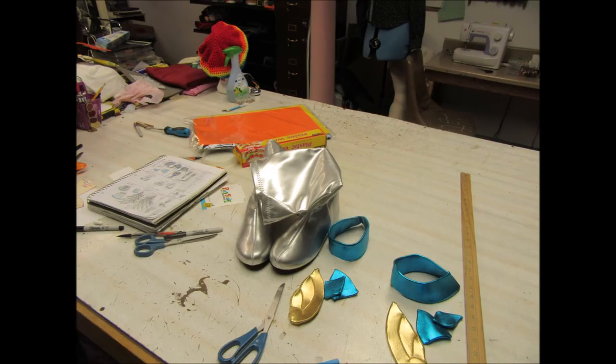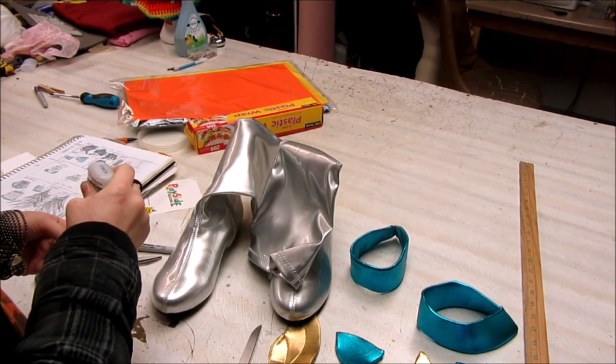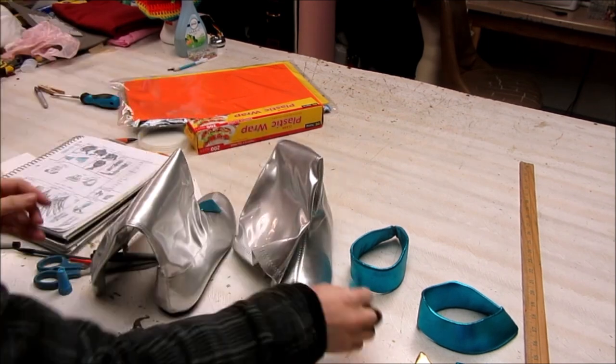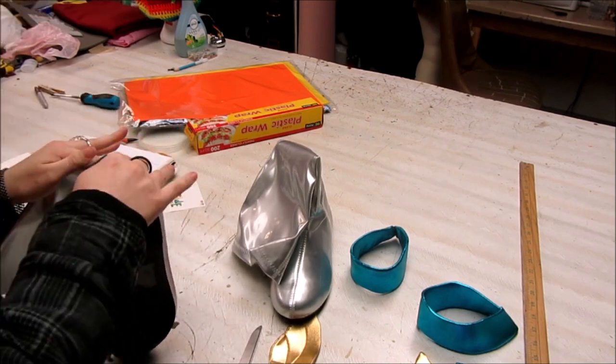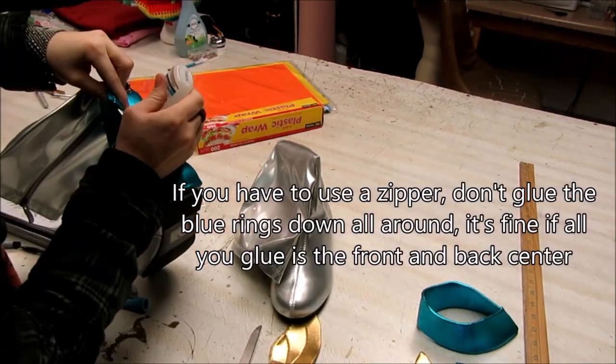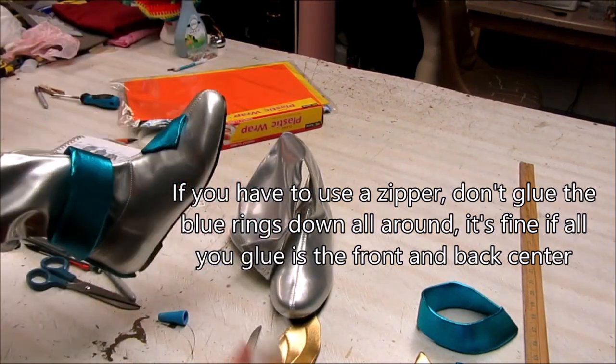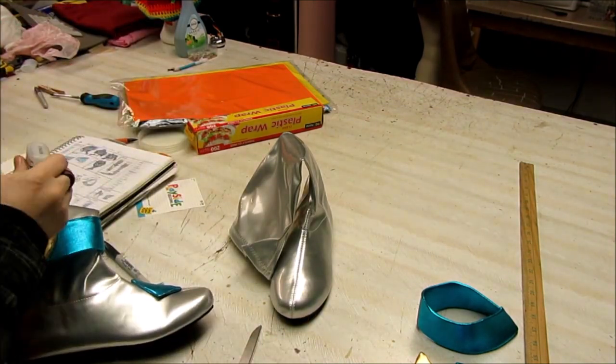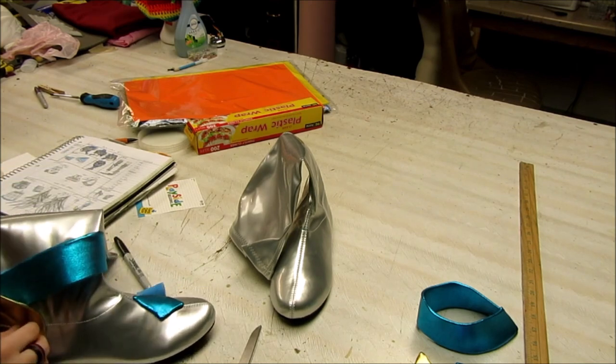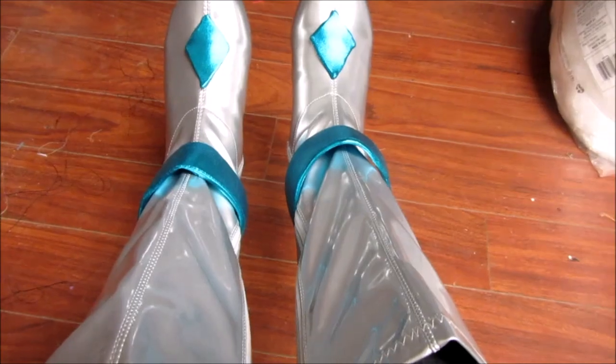After all your pieces are sewn, stuffed, and detailed, all that's left is to glue them in place. Super glue will work fine for this since it bonds well to the cheap plastic vinyl of my boots. And just like that, we can move on to the shins.